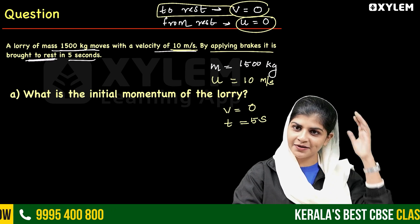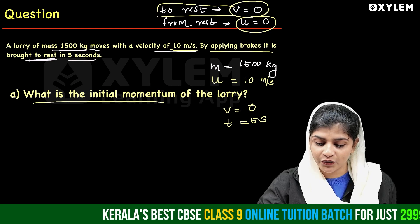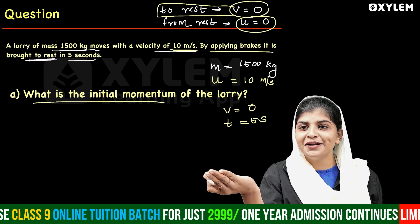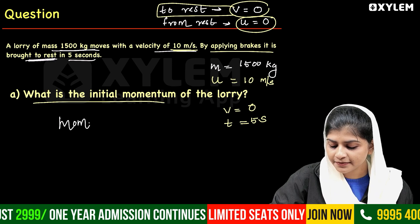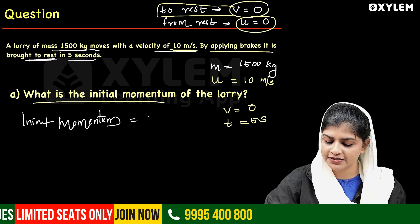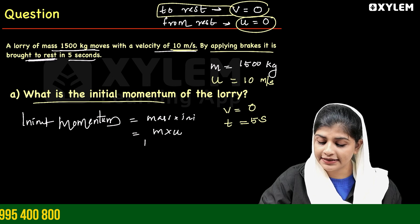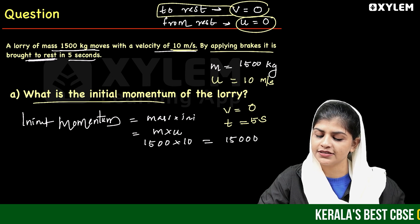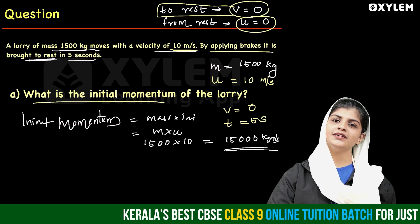Time is 5 seconds. What is the initial momentum of the lorry? Initial momentum is equal to mass into initial velocity, that is m into U. That is 1500 into 10, which equals 15,000 kilogram meter per second. This is the answer.